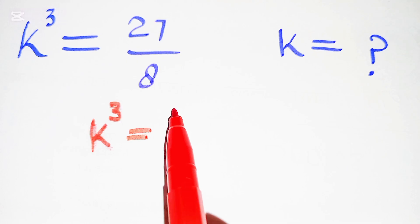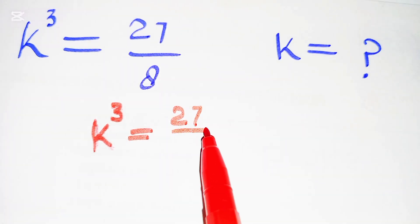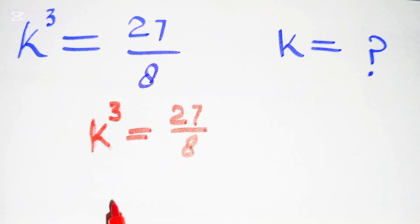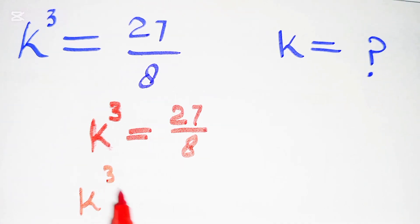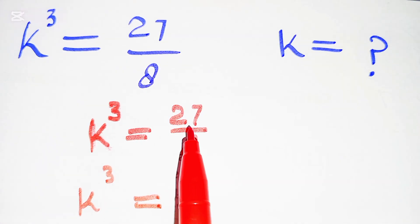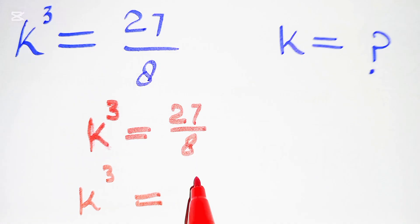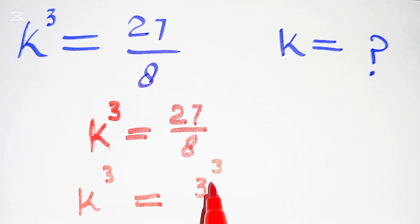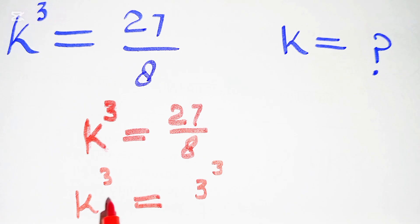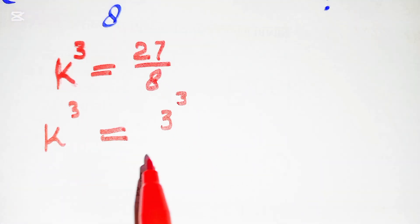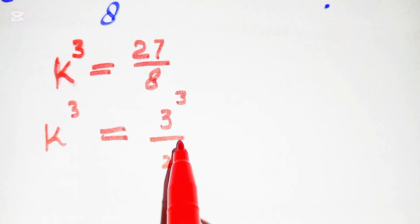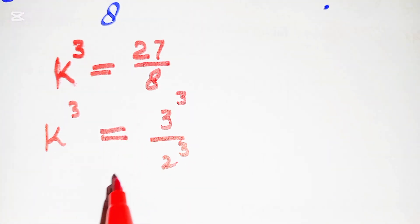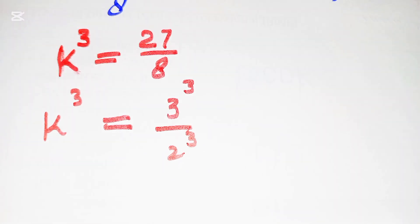We can write k³ = 27/8. Now, 27 can be written as 3³ (3 multiplied 3 times equals 27), and 8 can be written as 2³ (2 multiplied 3 times equals 8).